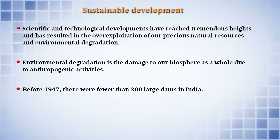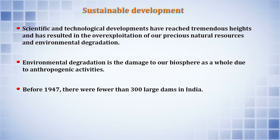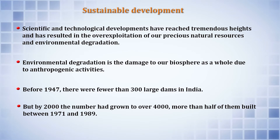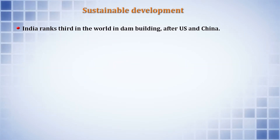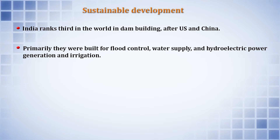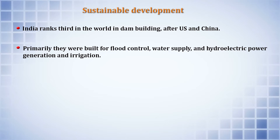Before 1947, there were fewer than 300 large dams in India. But by the year 2000, the number had grown to over 4000, and almost 50% were built between 1971 and 1989. India ranks third in the world in dam building, after the United States and China. These dams were built primarily for flood control, water supply, hydroelectric power generation, and irrigation.